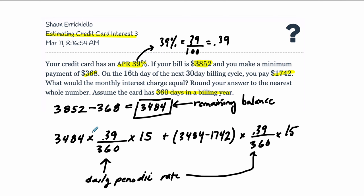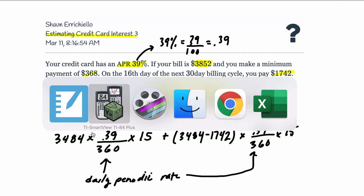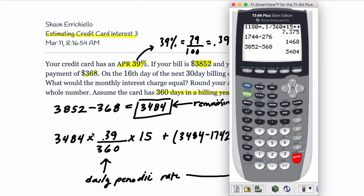And this is an estimate because this is called simple interest. And really, credit cards are compounding this, but it gives us a fairly good approximation over the course of a billing cycle. So 3484 times 0.39 divided by 360 times 15, plus, now I'm going to need parentheses here, 3484 minus 1742, close parentheses, and then times the same thing, 0.39 divided by 360 times 15. Enter. $84.9225.